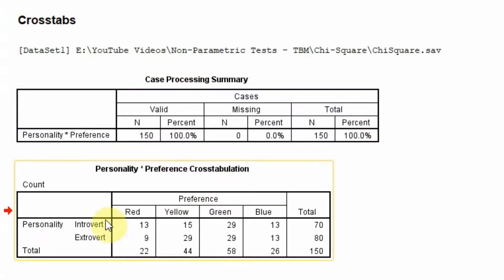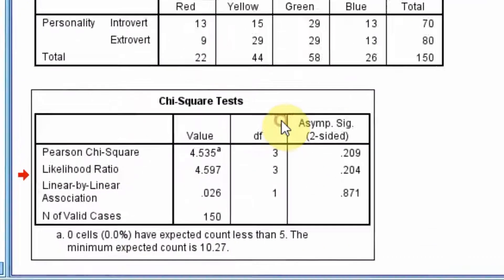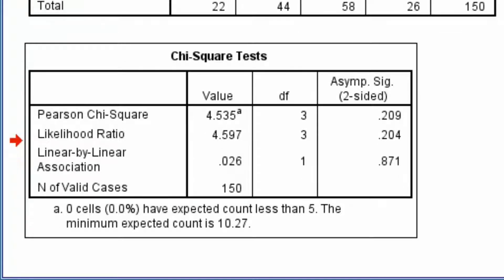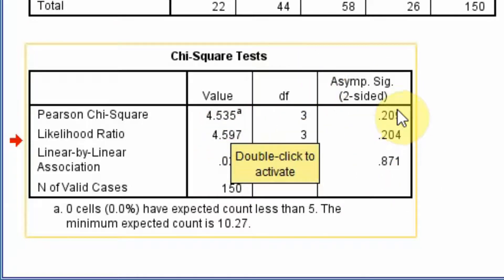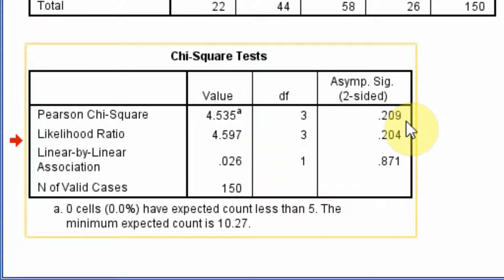Here are our results. We have 150 respondents and there are no missing values. In the cross-tabulation: among introverts, 13 preferred red, 15 yellow, 29 green, and 13 blue — totaling 70 introverts. Among extroverts, 9 preferred red, 29 yellow, 29 green, and 13 blue. To assess whether personality has any association with preferred color, we look at the chi-square statistics table.